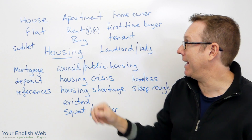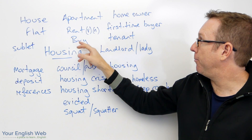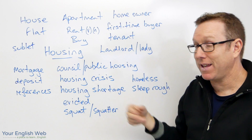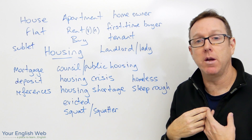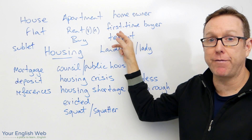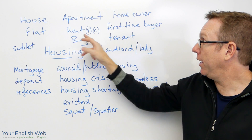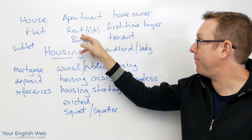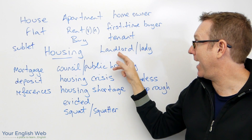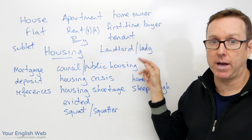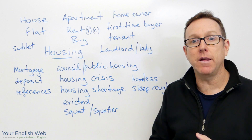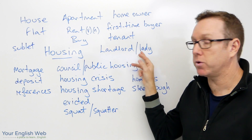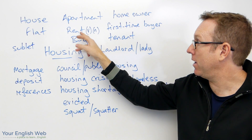If we buy a home we become a home owner. If it's the first home we've owned, we are first-time buyers. If we rent, we are tenants, and the people we rent from are the landlords or landladies — the people renting their houses, flats, or apartments to us.